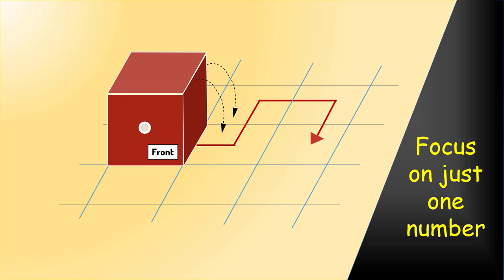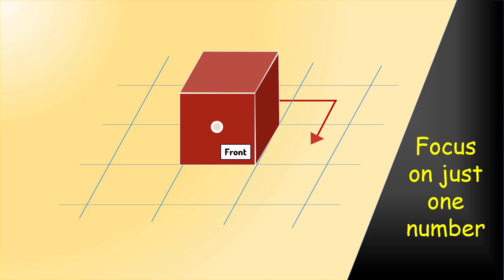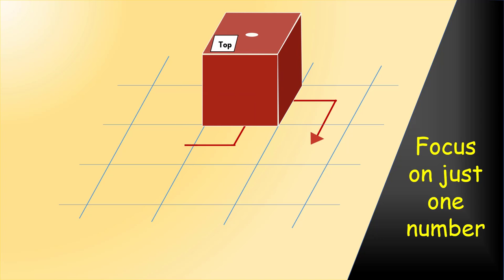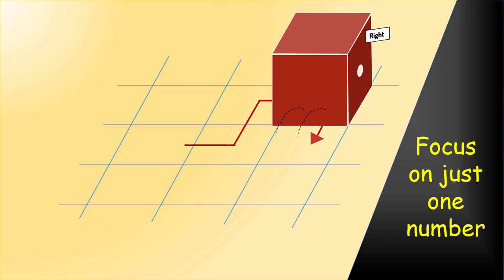After the dice is rolled on the right, the number 1 will stay on the front face. In the next move, 1 will go on the top. In the next move, 1 will go on the right. And after the final move, 1 will still stay on the right.